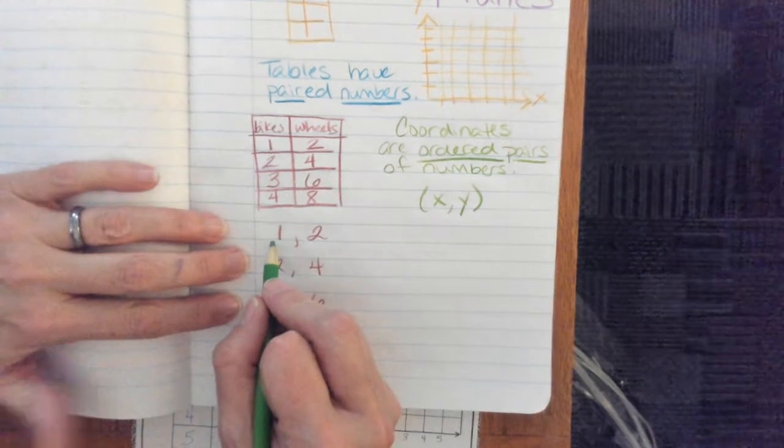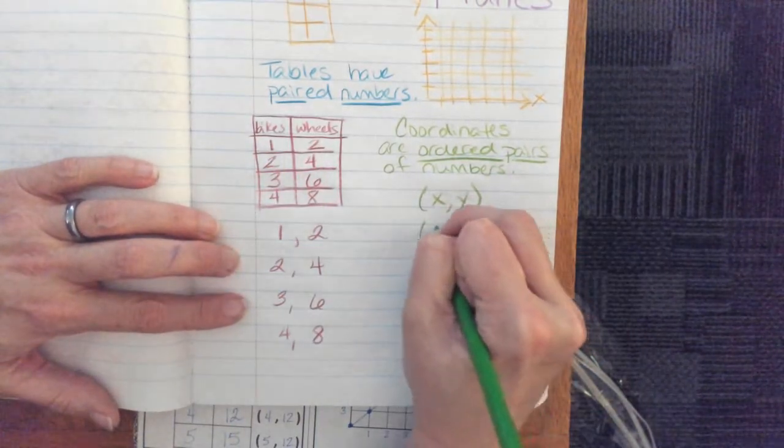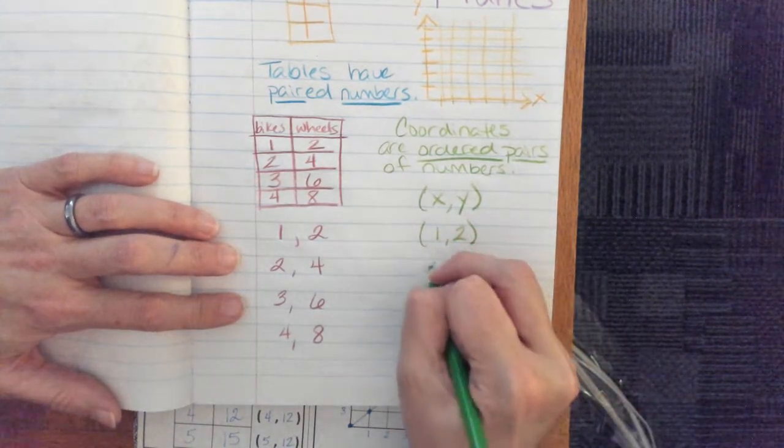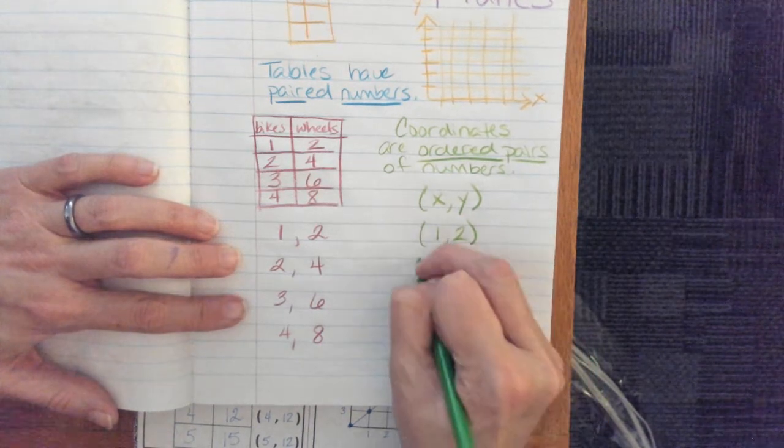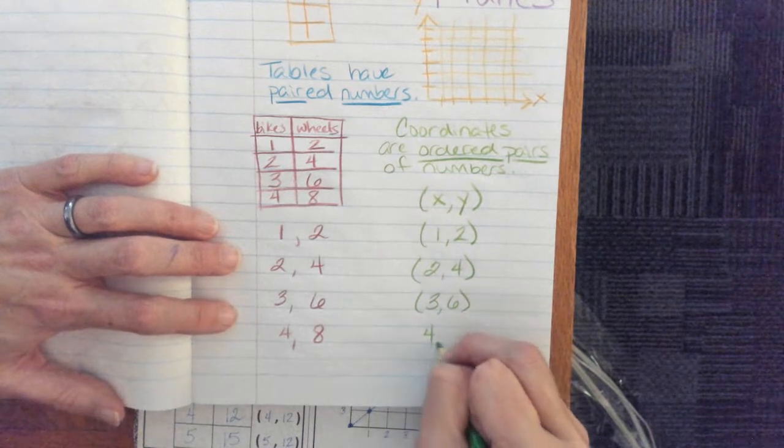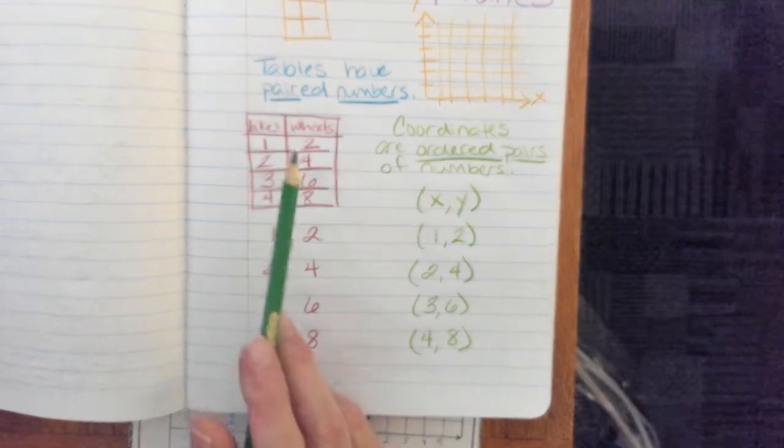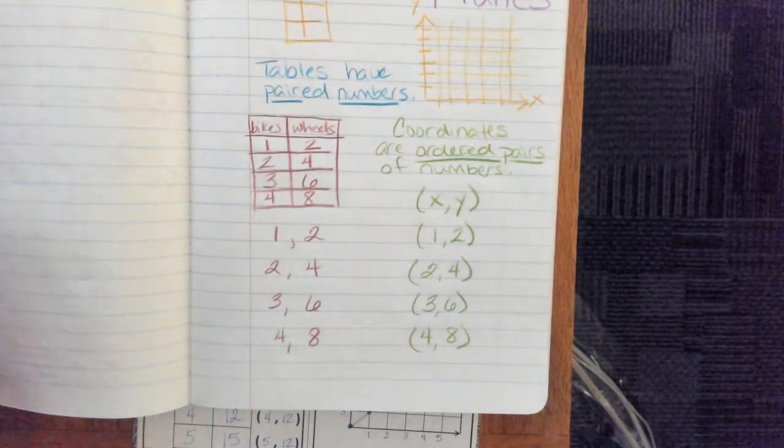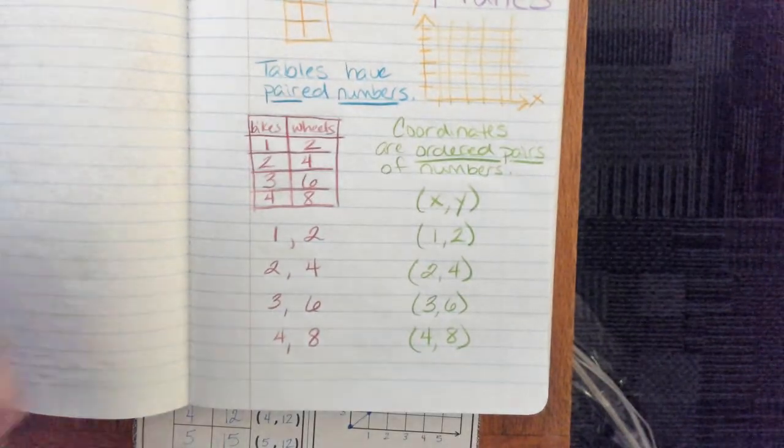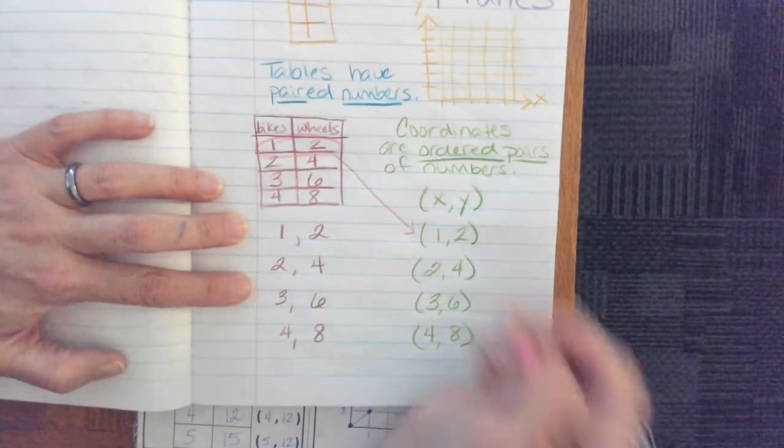So, you can take something like this one bike, two wheels, and you can turn that into an ordered pair. Two, four, three, six, four, eight. So, I've just taken the numbers from my table and I have turned them into ordered pairs. And they actually match up perfectly, like that one, two, just went right here.